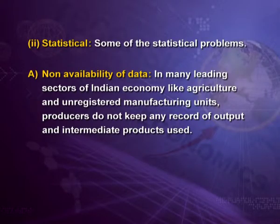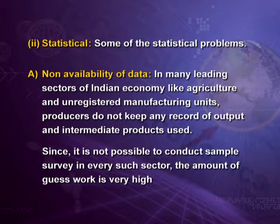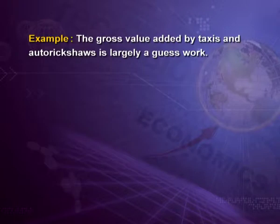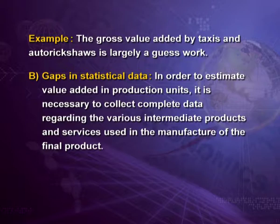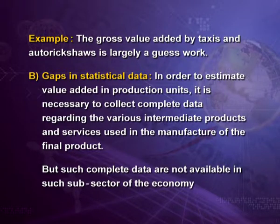Now, some statistical problems in measuring national income. First is non-availability of data. In many leading sectors of the Indian economy, like agriculture and unregistered manufacturing units, producers do not keep any record of output and intermediate products used. Since it is not possible to conduct a sample survey in every such sector, the amount of guesswork is very high. For example, the gross value added by taxis and auto-rickshaws is largely a guesswork. Second is gaps in statistical data. To estimate value added in production units, complete data regarding intermediate products and services used in manufacture of the final product is needed, but such data are not available in these sub-sectors.